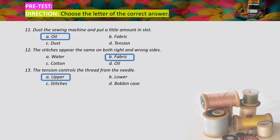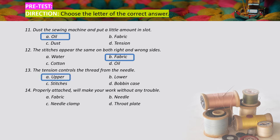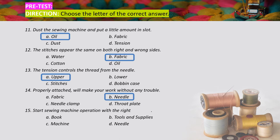Number fourteen: properly attached will make your work without any trouble — the correct answer is needle. Number fifteen: start sewing machine operation with the right blank — A) book, B) tools and supplies, C) machine, D) needle. The correct answer is letter B, tools and supplies.